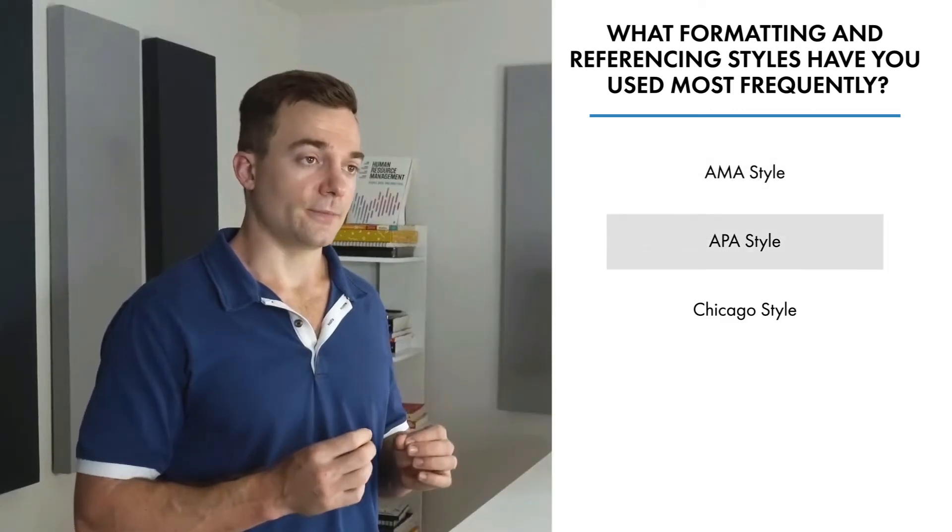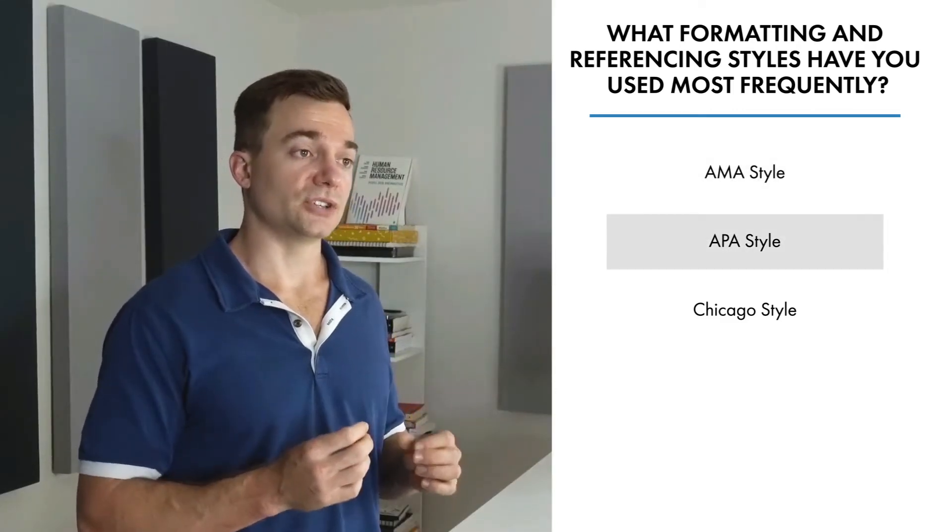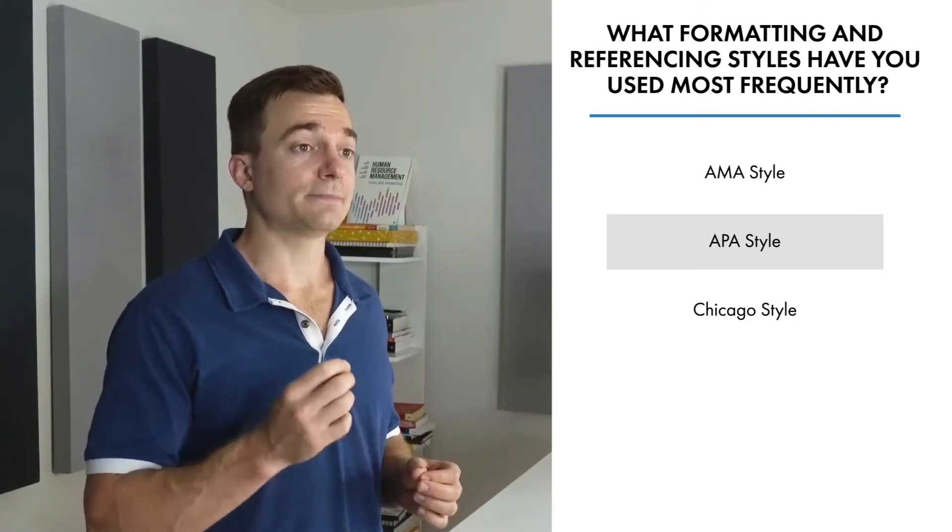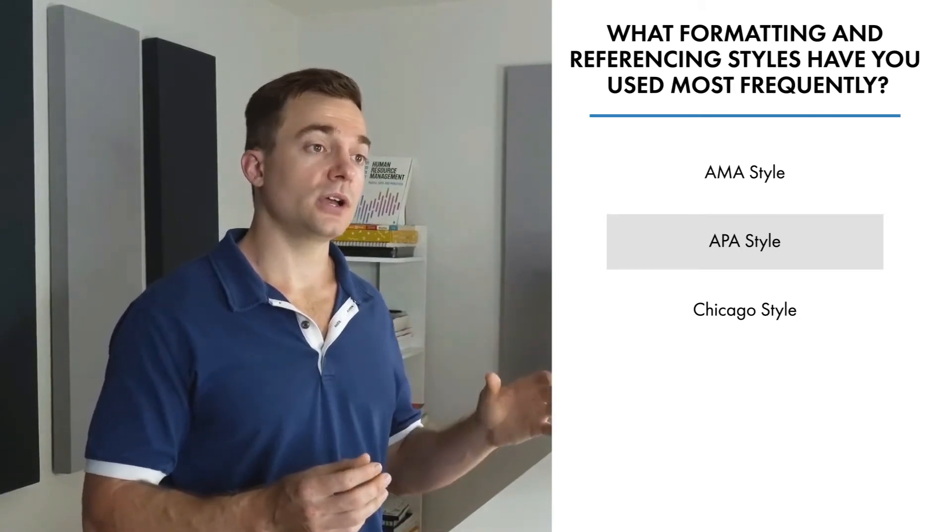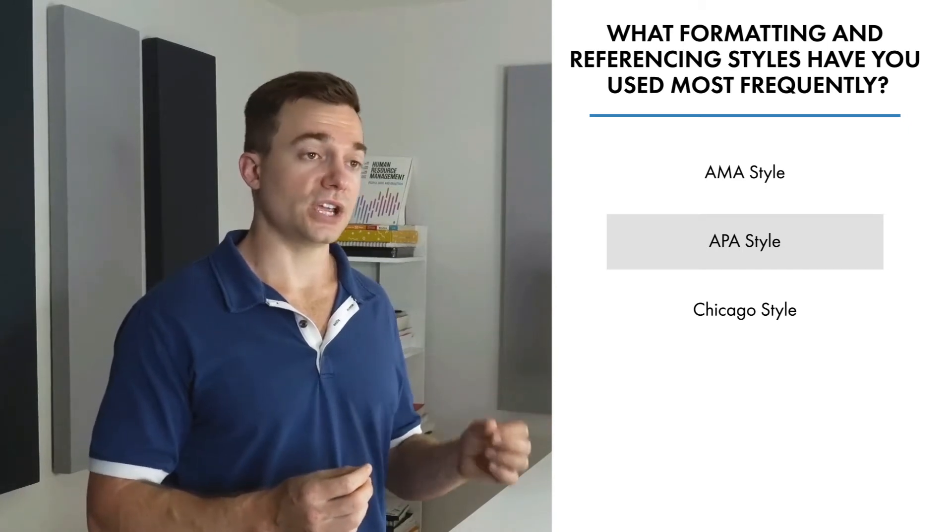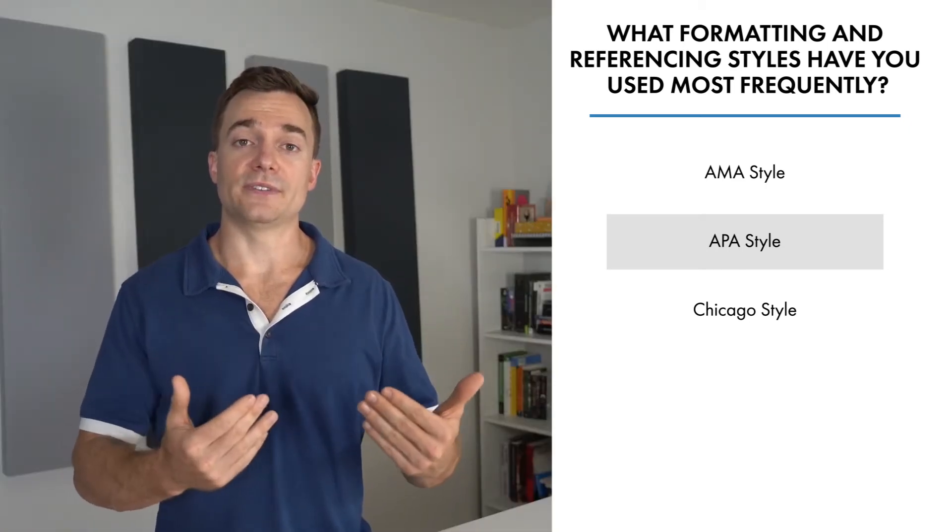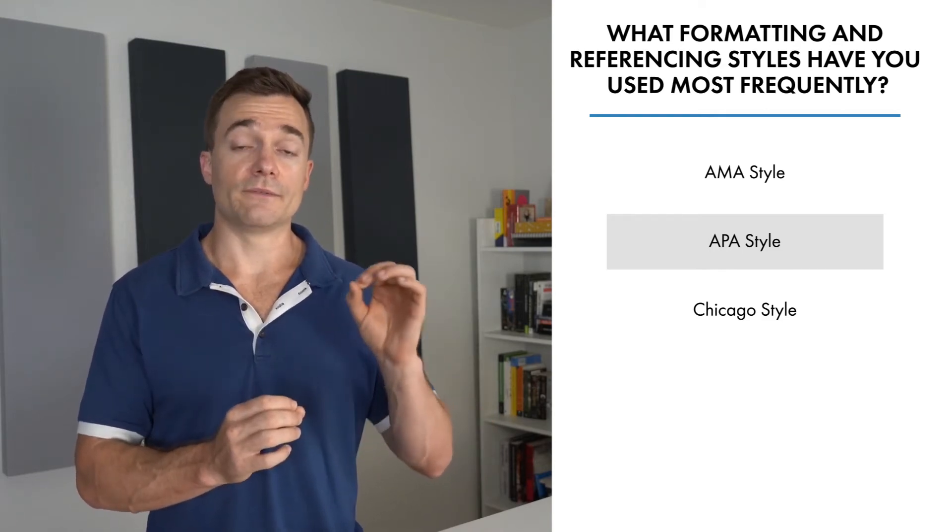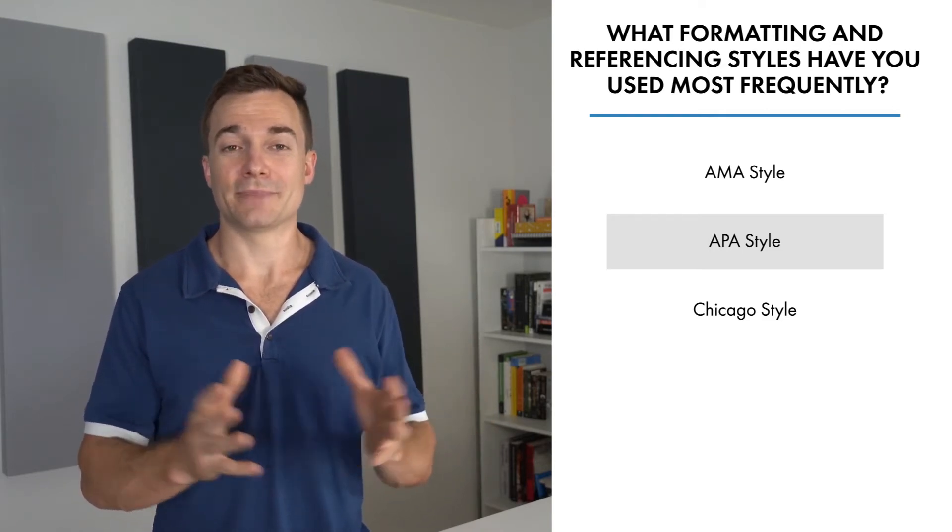We have APA style, which refers to the style of documentation of sources used by the American Psychological Association as published in the Publication Manual of the American Psychological Association. The APA provides specific guidelines for nearly all aspects of manuscript formatting, from font choice to margins and punctuation.